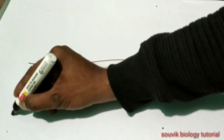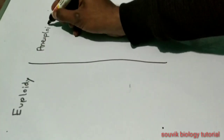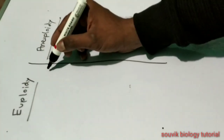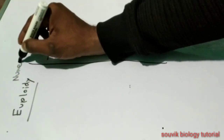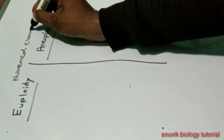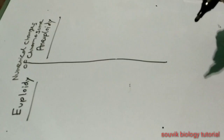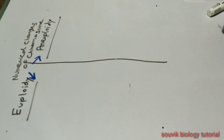Hello and welcome back everyone. In this video I am talking about the basic difference between euploidy and aneuploidy. First we have to know what is ploidy, also known as heteroploidy. Heteroploidy means numerical changes of chromosome. This heteroploidy can be divided into two types: one is euploidy and another one is aneuploidy.